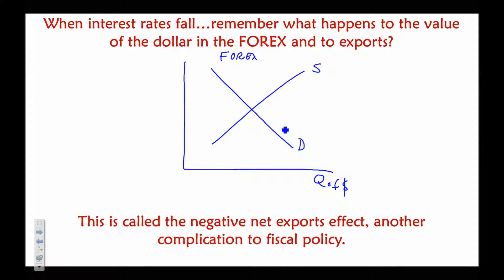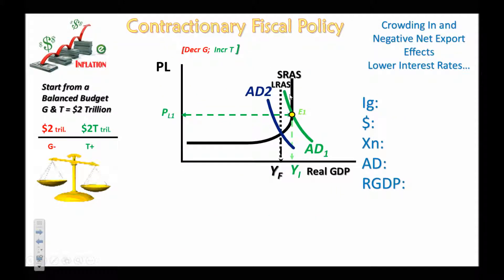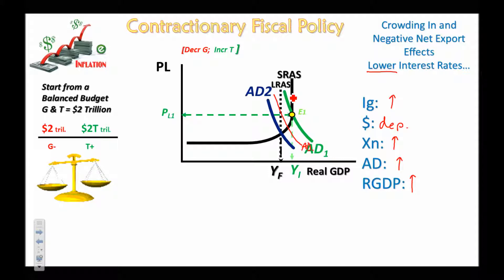In the foreign exchange market, lower interest rates decrease demand for the dollar, causing it to depreciate. A weaker dollar means exports become less expensive for foreigners, so exports increase. This ends up lessening the effect of the contractionary policy: lower interest rates increase investment, the depreciated dollar increases exports, AD rises, and real GDP increases — so the economy will probably still be a little bit inflationary.